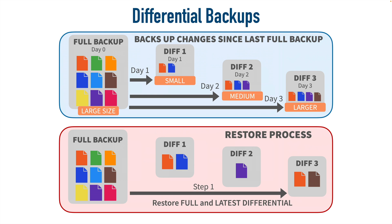The differential backup is a middle ground between full and incremental: it requires less storage than a full backup but more than incremental, because the longer we keep making differential backups day after day, the larger they become. But on a positive note, the restoration process is quicker than with incremental backups because we only need to restore two files — the full backup and the latest differential backup. So if it's differential three, we skip differentials one and two, restore the full and differential three, and we're good to go.